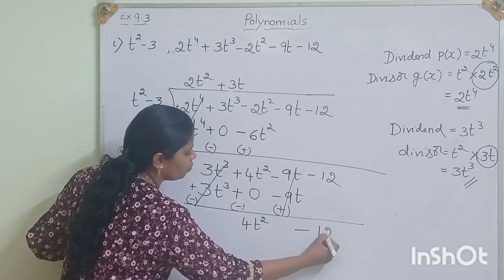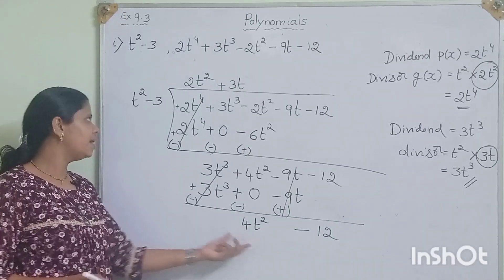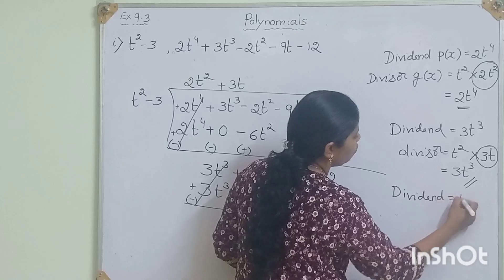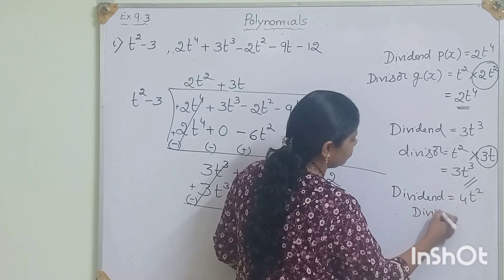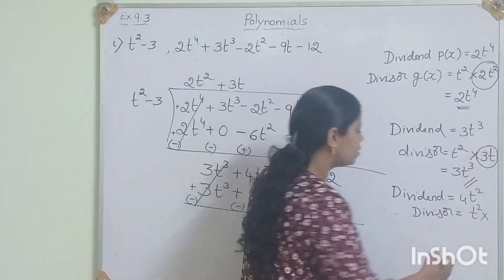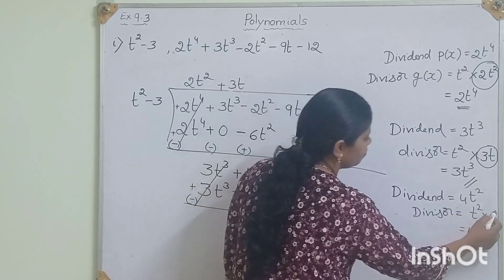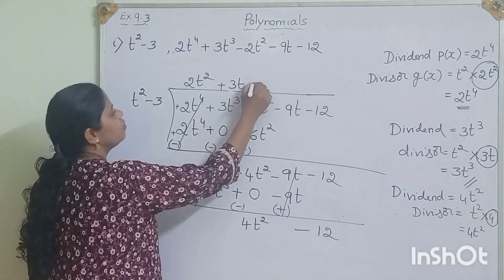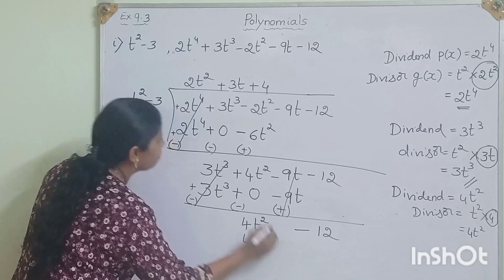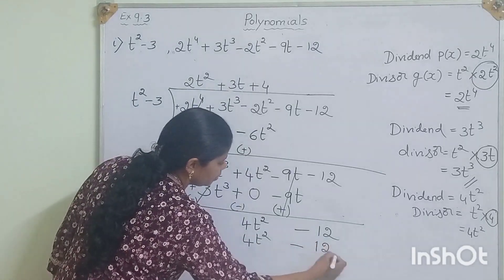We bring down minus 12. So we have 4t squared minus 12. Again compare the first term of the dividend (4t squared) with the divisor's first term (t squared). What do we multiply to get 4t squared? We multiply by 4. So plus 4 in the quotient. t² × 4 = 4t squared. Minus into plus is minus — 3 × 4 = 12, so minus 12.